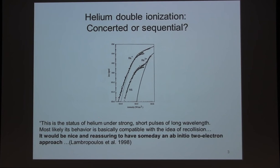And here's another system which I think is very familiar to this audience, concerning concerted versus sequential double ionization in helium. We see here this famous knee structure in the double ionization. And here's a quote from Lambropoulos' very extensive review article in 98. The status of helium under strong short pulses of long wavelength, most likely its behavior is basically compatible with the idea of recollision. It would be nice and reassuring to have someday an ab initio two-electron approach.